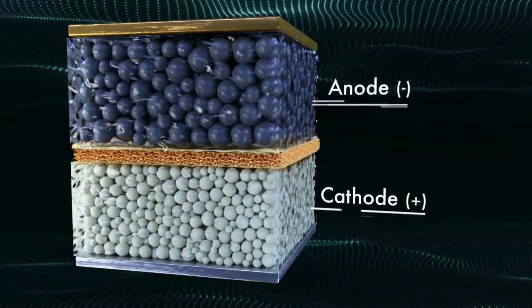The anode is the negative pole of the battery made of anodic material, such as carbon or graphite, and the current collector.